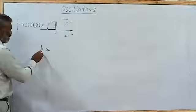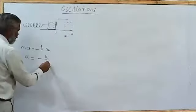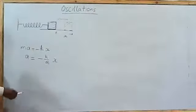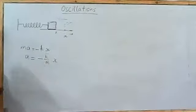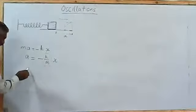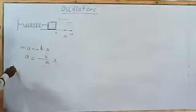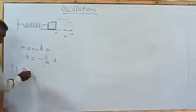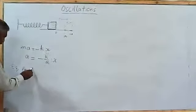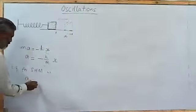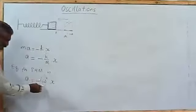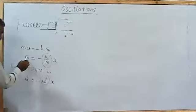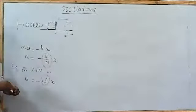So once again, acceleration can be seen equal to minus K/M times X. This is the term that is of interest for us, because when I compare it with the standard equation for simple harmonic motion, a equals minus ω²X, and these two things are to be compared now because all other things correspond and they are similar.